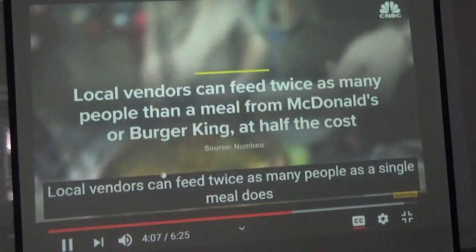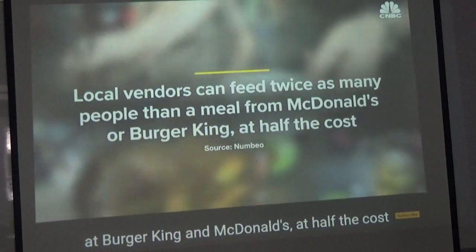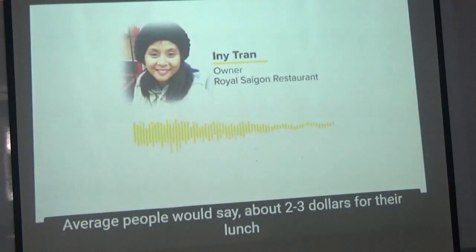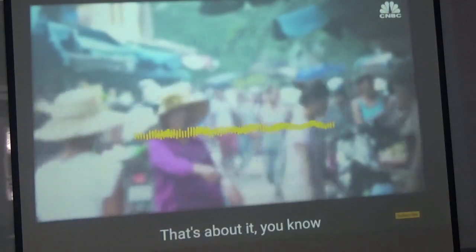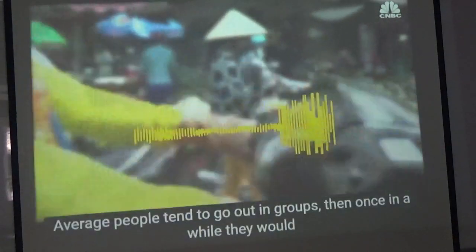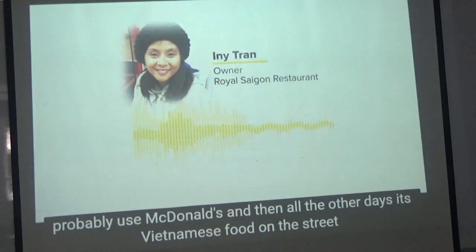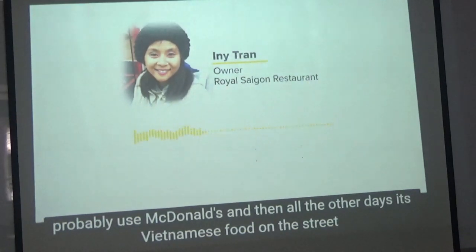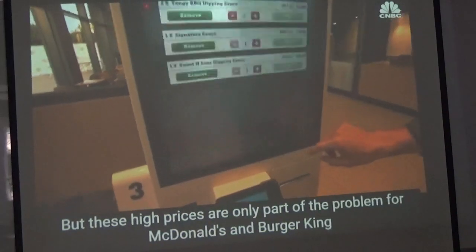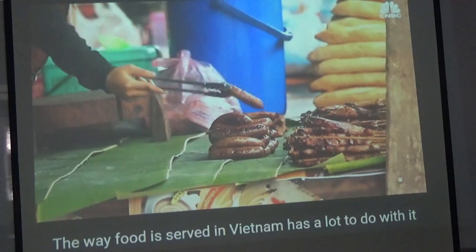Local vendors can feed twice as many people as a single Burger King or McDonald's meal at half the cost. People spend about $2 to $3 for their lunch, and once in a while they'd use McDonald's as a treat, but most days they eat street food for less. These high prices are only part of the issue for McDonald's and Burger King — the way food is served in Vietnam has a lot to do with it.